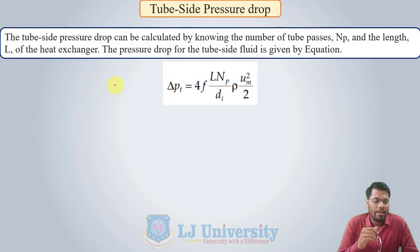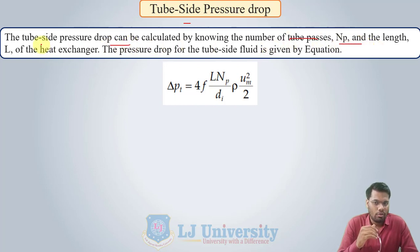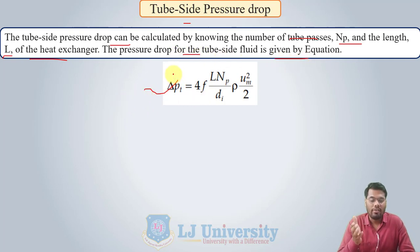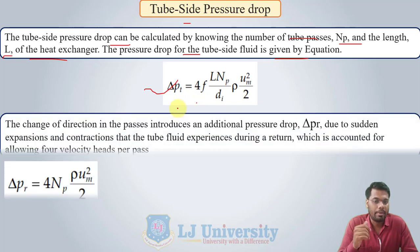Now, for tube side pressure drop — we have already discussed the equation for tube side pressure drop in our previous lecture, so let us revise it. The tube side pressure drop can be calculated by knowing the number of tube passes Np and the length of the tube, which are parameters already decided in our preliminary stages. The pressure drop for the tube side is given by the Fanning equation, which we have already discussed in our compact heat exchanger chapter.